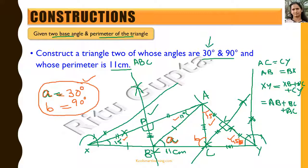The perimeter AB plus BC plus AC equals 11 cm. This is how we construct a triangle when two base angles and the perimeter are given.